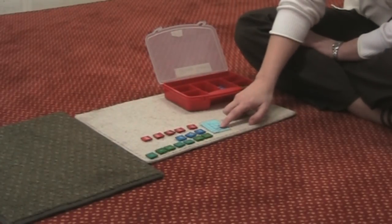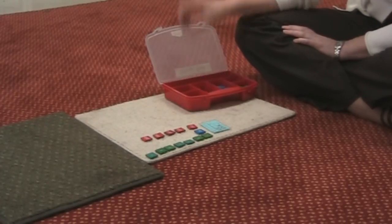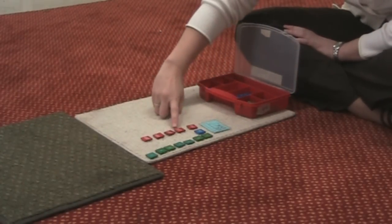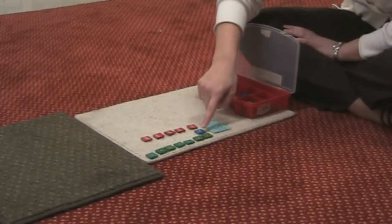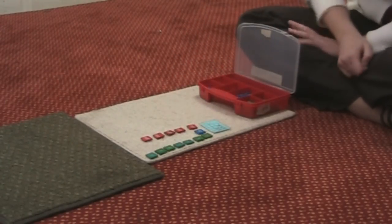We need to take away 2 tens. 10, 20. And we can find our answer, which is 1, 2, 3, 4, 500. 10, 11, 12, 13, 14, 15, 16, 17.